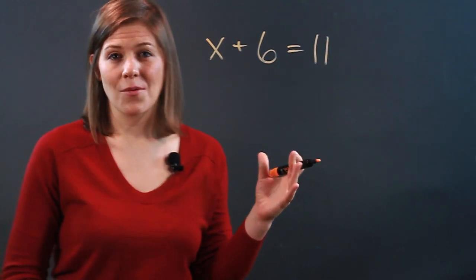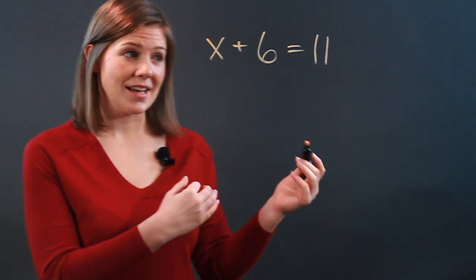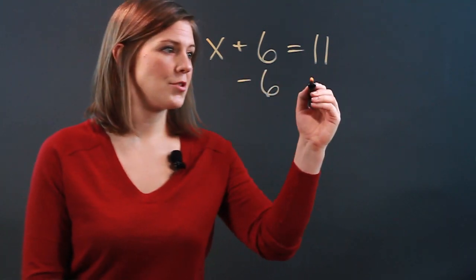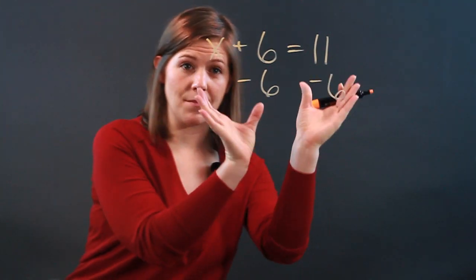Now, how are we going to solve this? Well, even though we're adding, we're actually going to eliminate by subtraction. So if we subtract 6 from both sides, it remains a balanced equation, equation meaning equal on both sides.